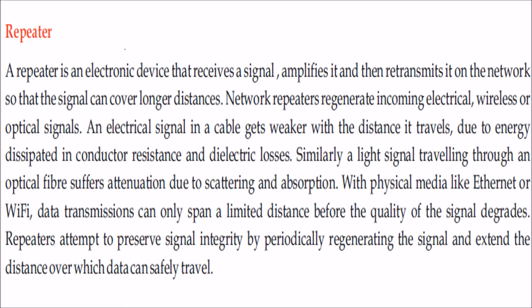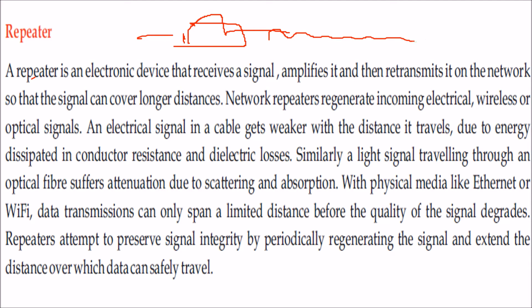A repeater is nothing but amplifying the signal. A repeater is an electronic device that receives the signal, amplifies it, and then retransmits it onto the network so that the signal can travel over a long distance.